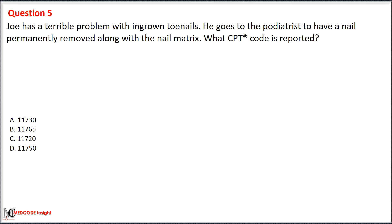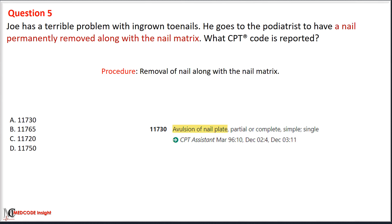Option A: 11730. Option B: 11765. Option C: 11720. Option D: 11750. In the given scenario, removal of the nail along with the nail matrix is performed. In the CPT index, looking for 'removal of nail' directs to code range 11730–11732 and code 11750. We eliminate option A with code 11730, which is used to report removal of the nail only using simple avulsion techniques.